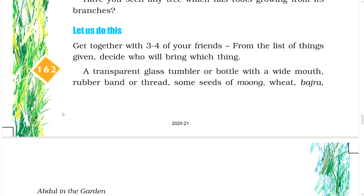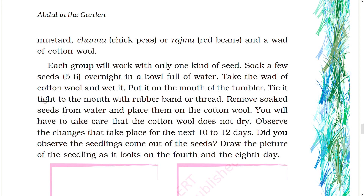Let us do this. Get together with three to four friends. From the list of things given, decide who will bring which item: a transparent glass tumbler or bottle with a wide mouth, rubber band or thread, and some seeds of moong, wheat, bajra, mustard, chana, chickpeas, or rajma (red beans), and a wad of cotton wool. Each group will work with only one kind of seeds.